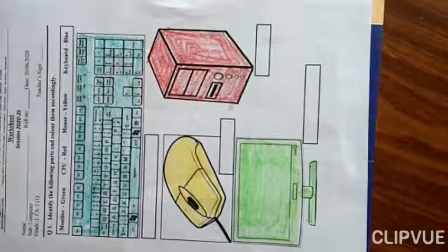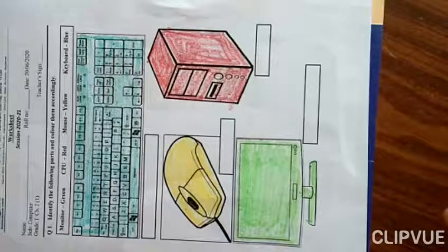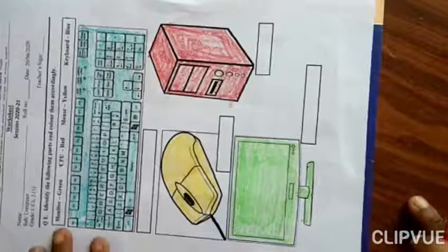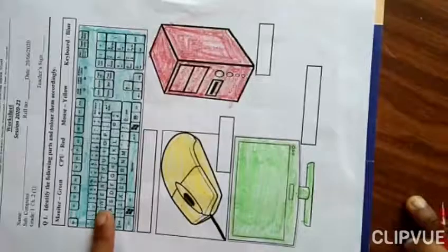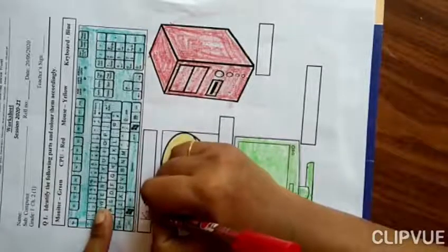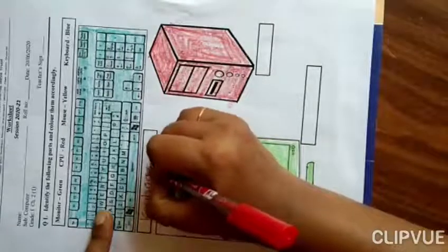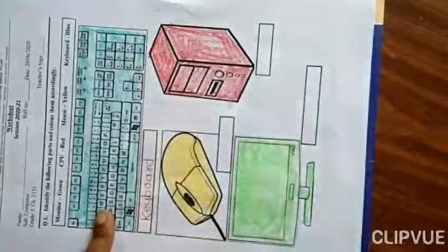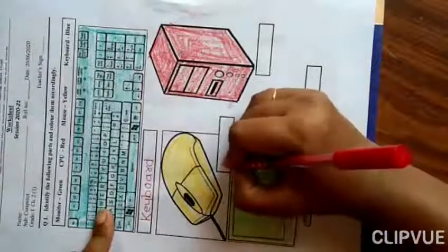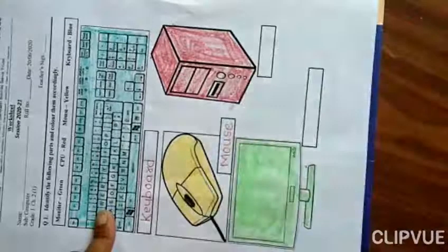Now coloring part is complete, but one more important part of naming the parts is still left. So now pencil in hand and start writing. Which we have colored in blue color? What was that? Yes, that was keyboard. So write down here. Now yellow color we colored which one? Yes, mouse. M-O-U-S-E. Mouse.